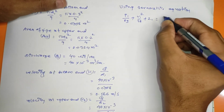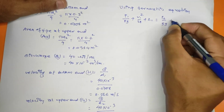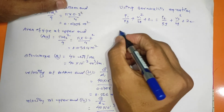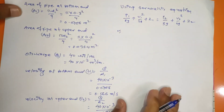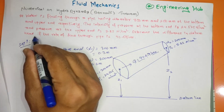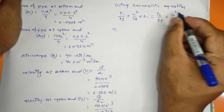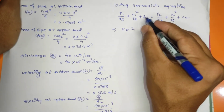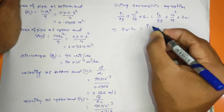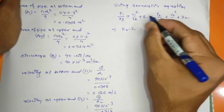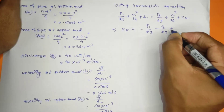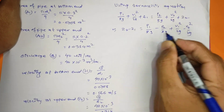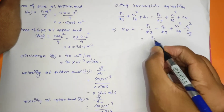Total energy equals P2 by ρg plus V2² by 2g plus Z2. Rearranging for the difference in datum head, Z2 minus Z1 equals P1 by ρg minus P2 by ρg plus V1² by 2g minus V2² by 2g.